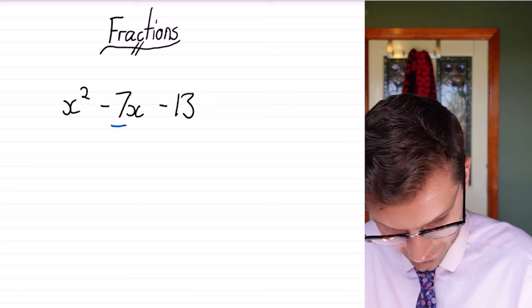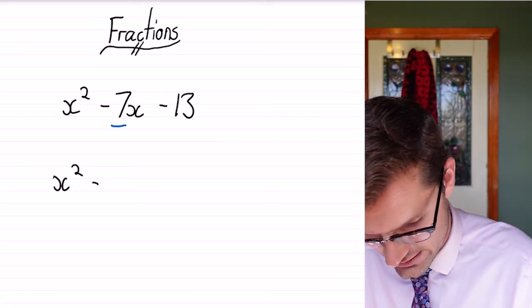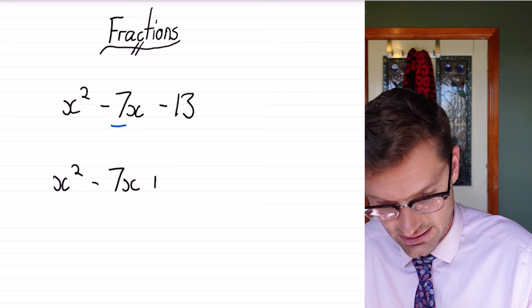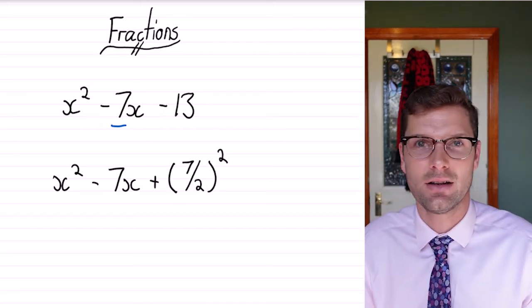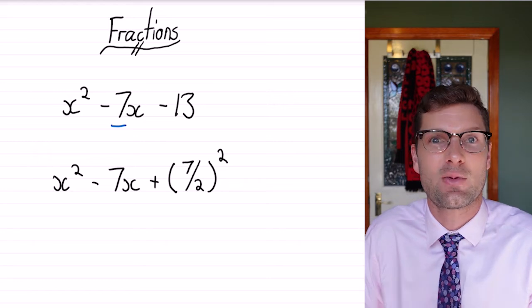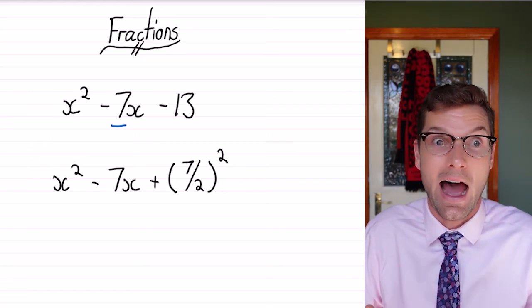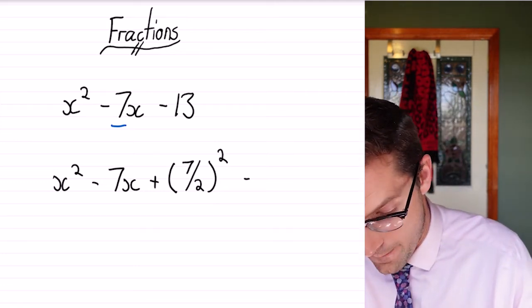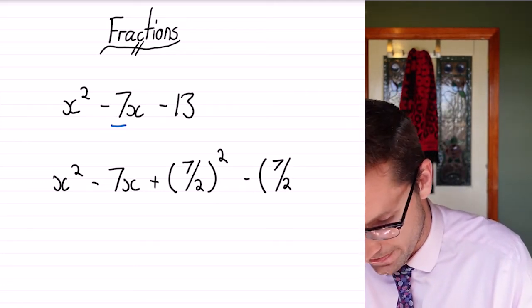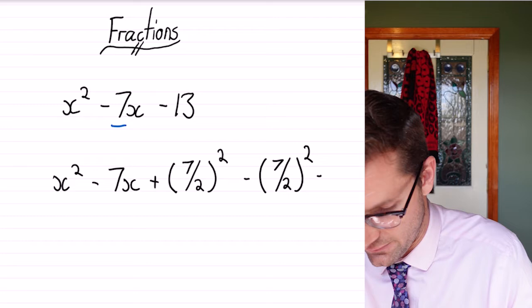So for here we've got x² - 7x plus our (7/2)². So instead of working it out, because we're just writing the fraction, we can half 7 and square it. That's all we've got to do. We've got to minus this off as well, and then minus this final 13.